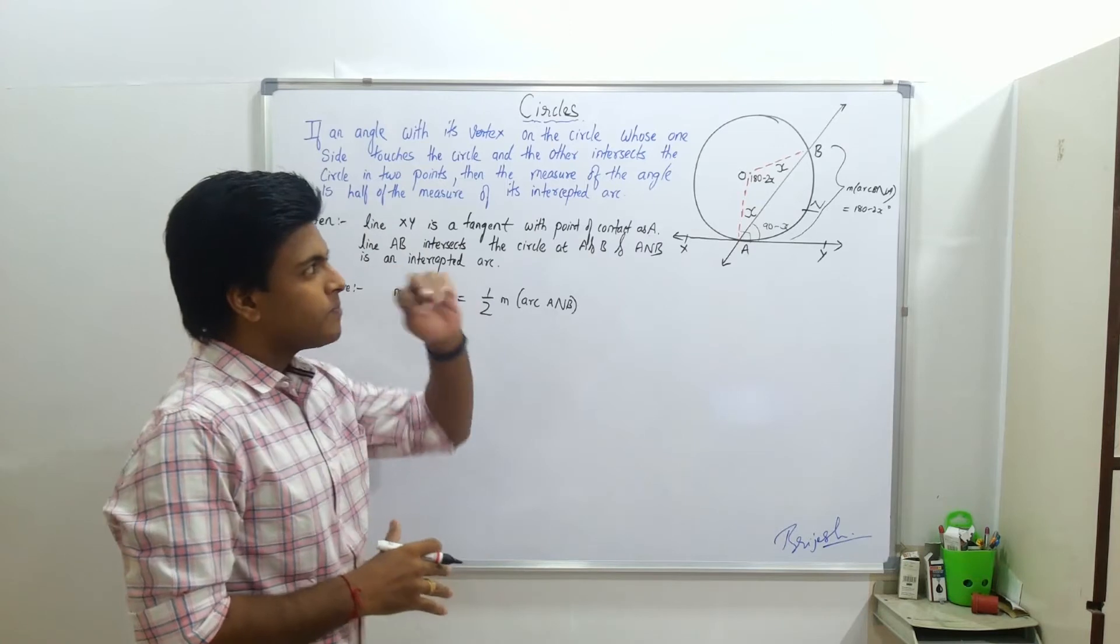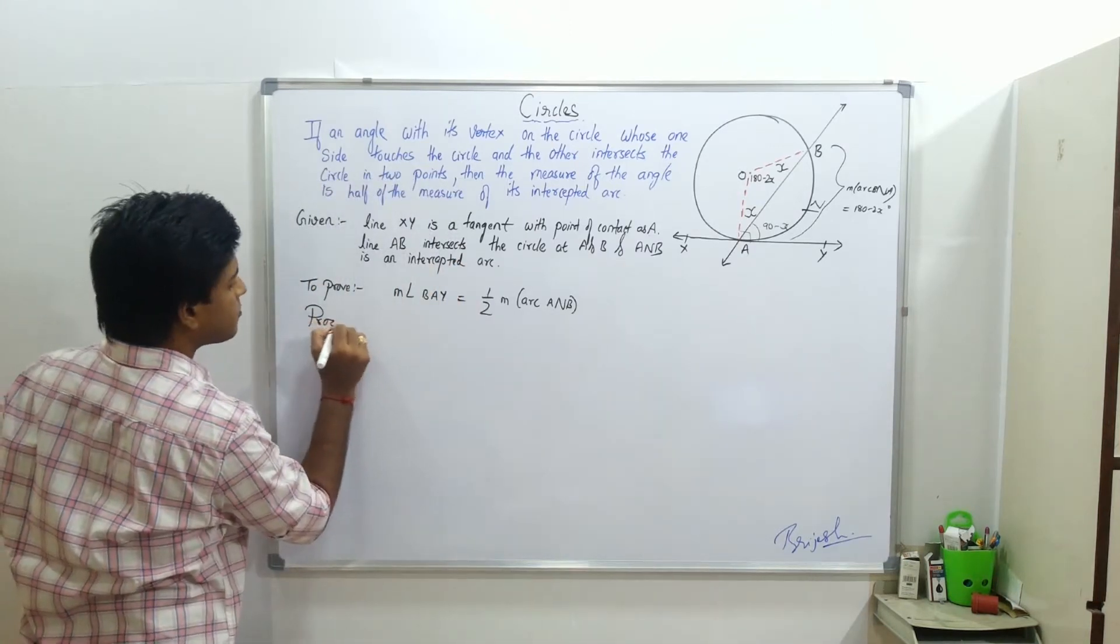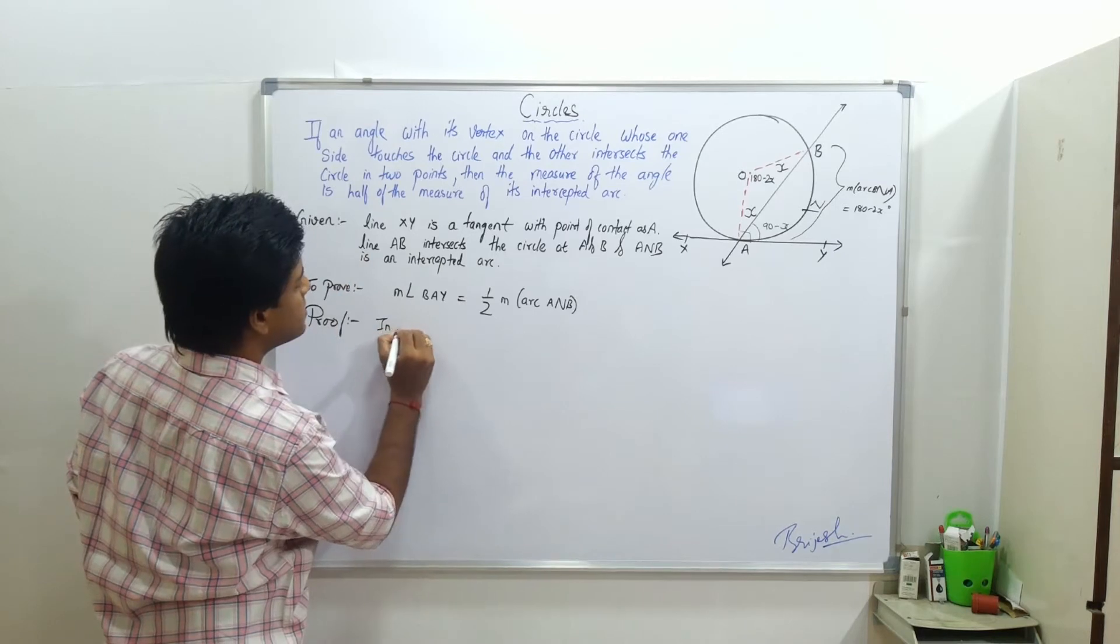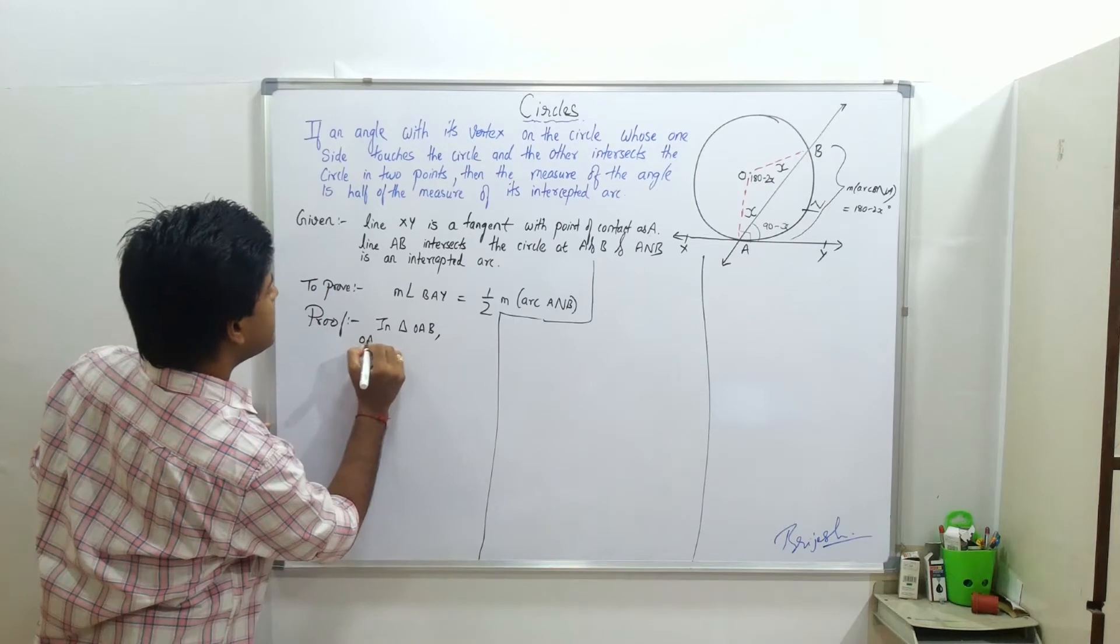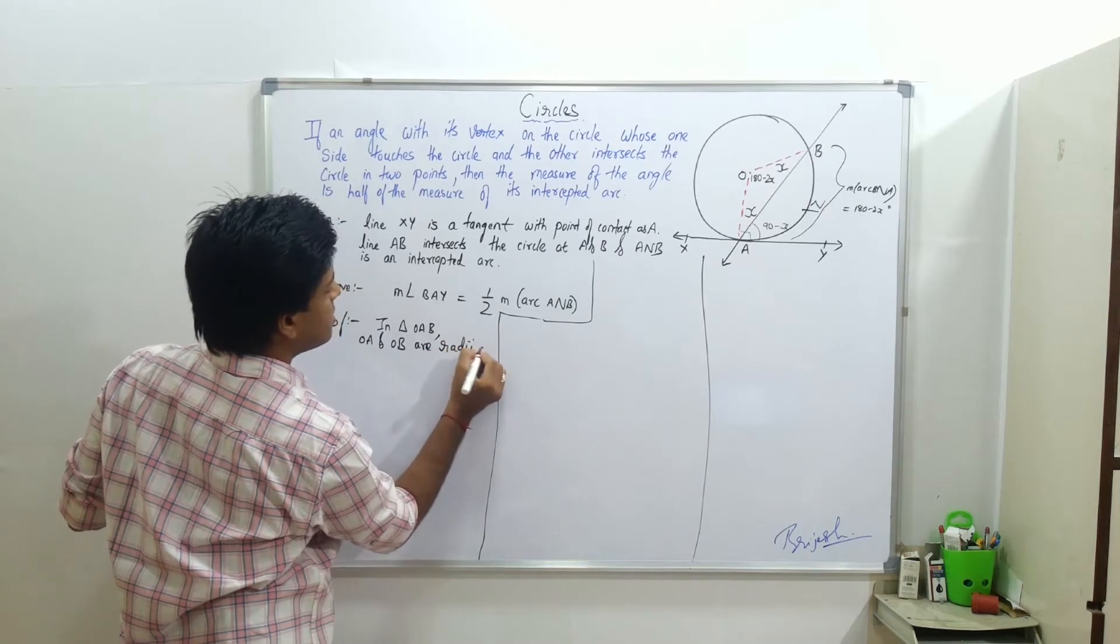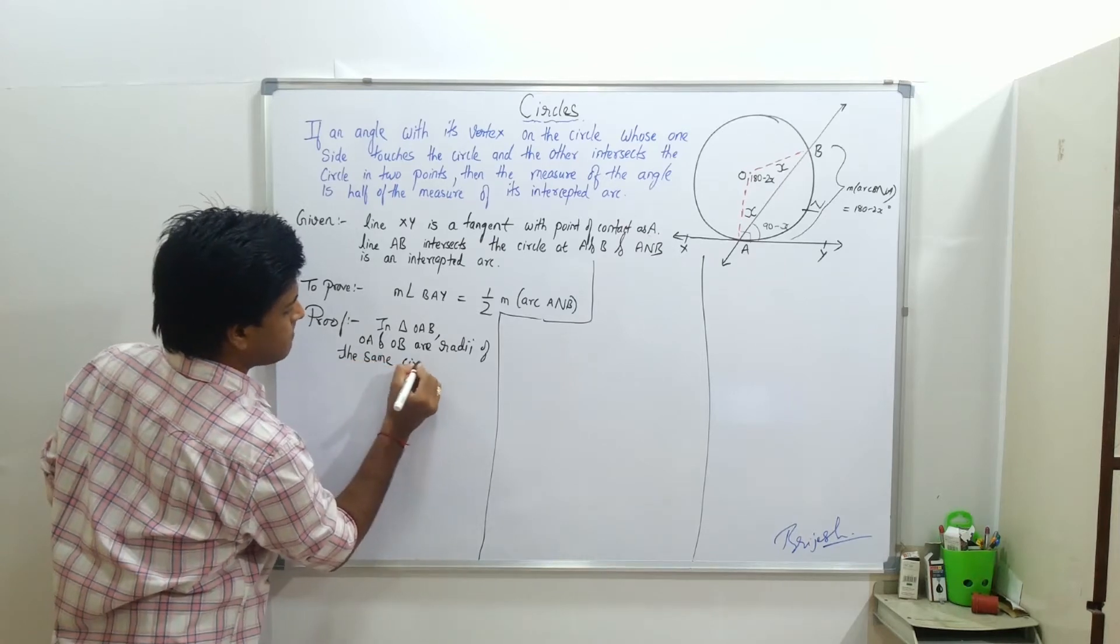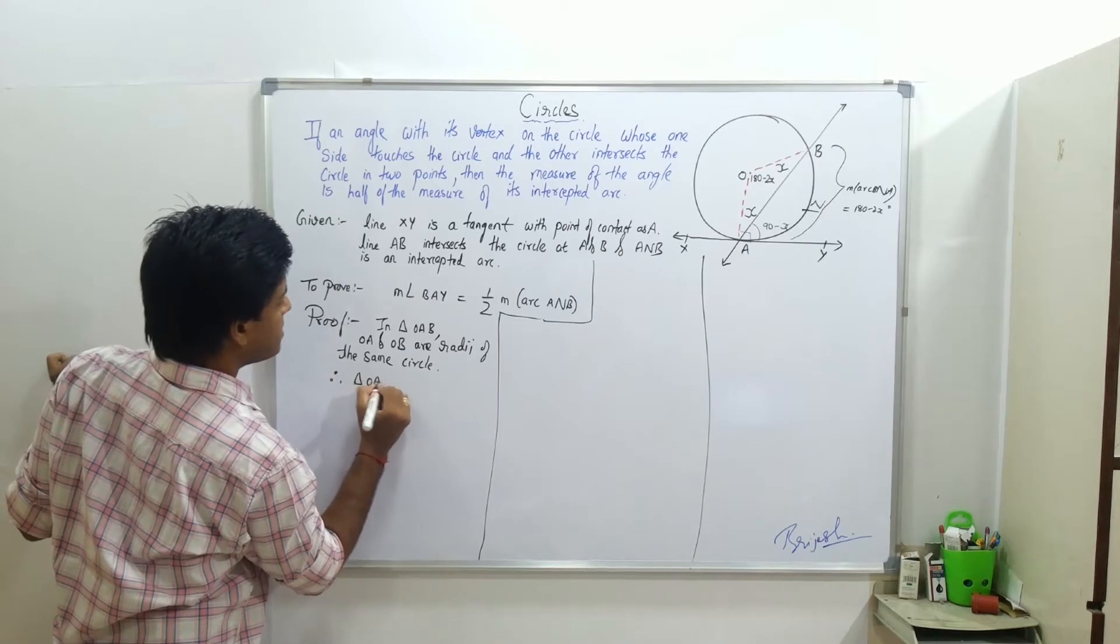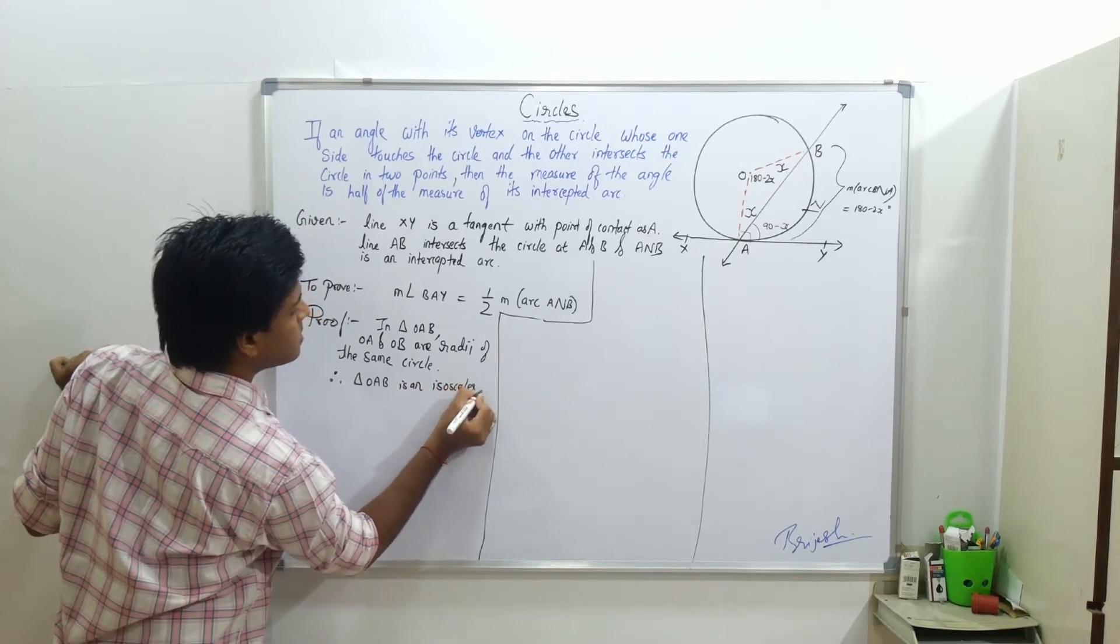Now we will write this in the proper proof. We will start with the isosceles part. In triangle OAB, OA and OB are radii of the same circle. Therefore, triangle OAB is an isosceles triangle.